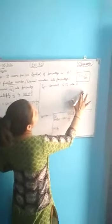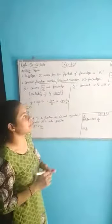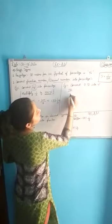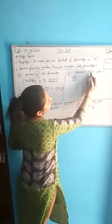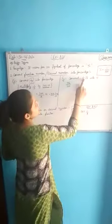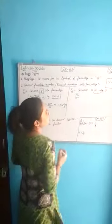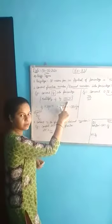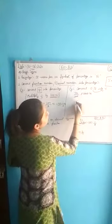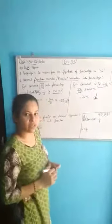Convert 0.72 into percentage. This is a decimal number. How can we convert a decimal number into percentage? First, remove the decimal point. Since there are two digits after the decimal, apply 100 to the denominator, giving 72 over 100. Now to convert this into percentage, multiply by 100 percent. The 100 cancels with 100, leaving 72 percent. That is your answer.